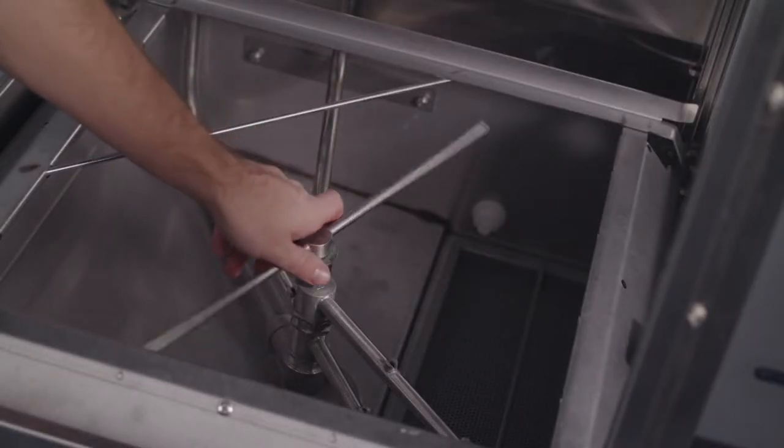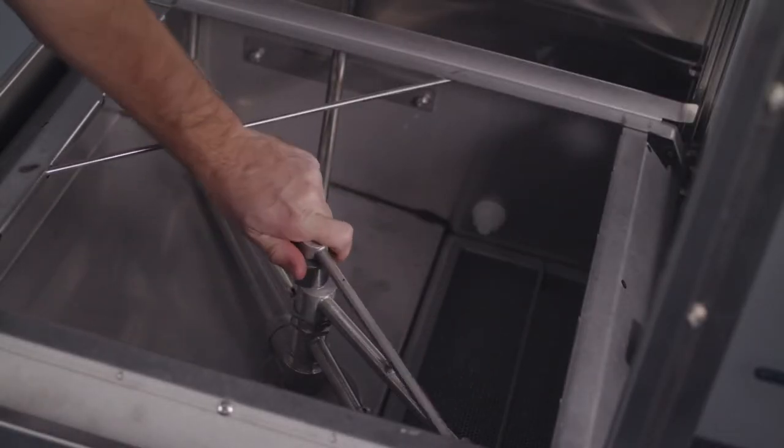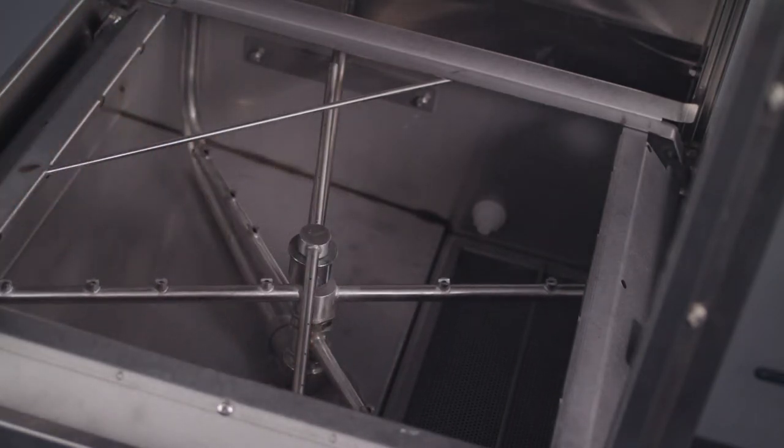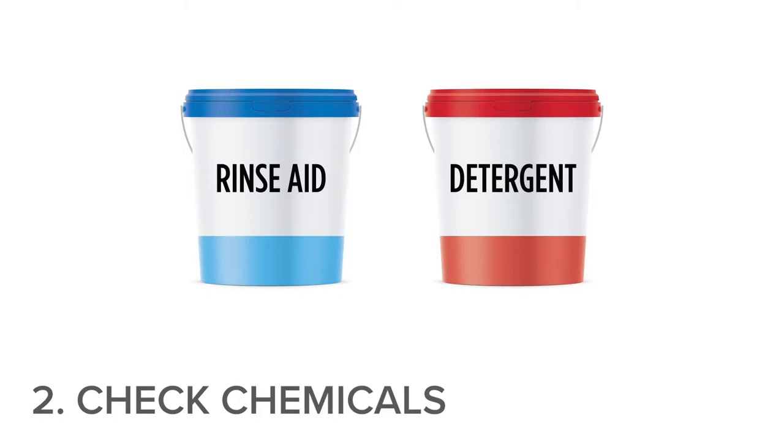Inspect the wash and rinse arms. The arms and end caps should be screwed securely in place and able to rotate freely. Next, check the chemical levels. Replace if empty and prime the lines.